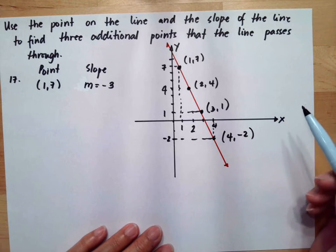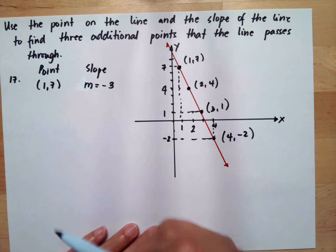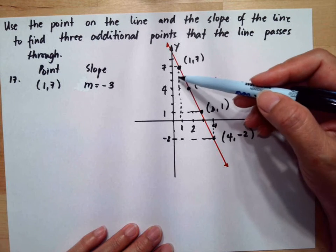So what we did is we follow the slope. Because it's negative 3, that means you step down, so we have 1, 2, 3 steps.